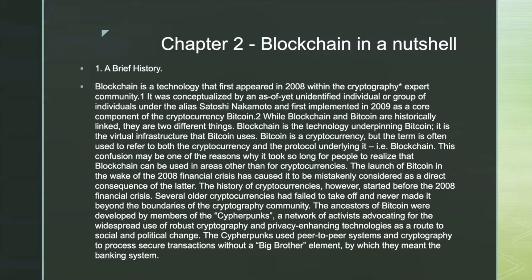Moving to Chapter Two: Blockchain in a Nutshell — let's start with a brief history. Blockchain first appeared in 2008 within the cryptography expert community. It was conceptualized by an as-yet unidentified individual or group under the alias Satoshi Nakamoto, and was first implemented in 2009 as a core component of the cryptocurrency Bitcoin. While the Bitcoin blockchain and Bitcoin are historically linked, they are two different things: blockchain is the technology underpinning Bitcoin, and Bitcoin itself is a cryptocurrency. This confusion may be one reason why it took so long for people to realize that blockchain can be used in areas other than cryptocurrencies.